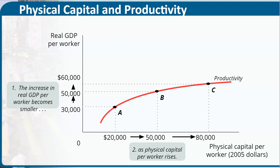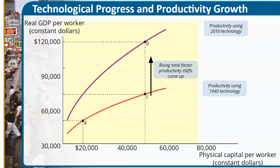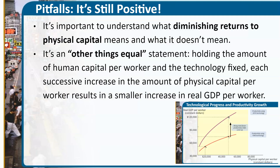Over time we'll continue to see growth and productivity because we're building on the foundations of previous years. If you look at 1940s technology versus 2010 technology, by taking the views of history we are improving through productivity — building on technologies we have to create, innovate, and develop new technologies that help grow our economy even greater than before. The growth of technological progress improves productivity, adds to real GDP, and ultimately improves real GDP per capita — still positive, just growing at a slower rate.